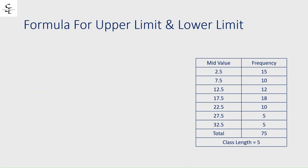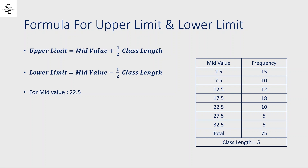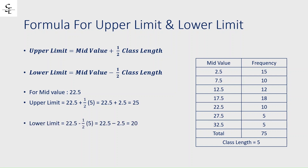When classes are not given, we don't have the upper or lower limit, so we use these formulas: upper limit = mid value + (class length / 2), and lower limit = mid value − (class length / 2). For mid value 22.5 with class length 5: upper limit = 22.5 + 2.5 = 25, and lower limit = 22.5 − 2.5 = 20. Now obtain the upper and lower limit for mid value 32.5. Note down all these formulas on one page for reference.